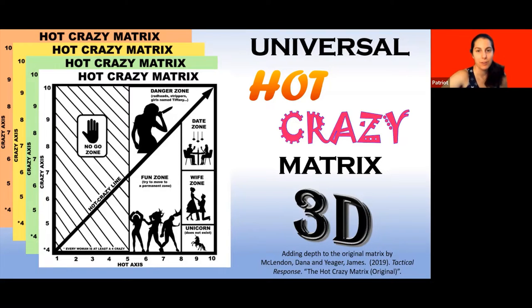Many of you may be familiar with the universal hot crazy matrix for classifying women and men developed by Dana McClendon and James Yeager of Tactical Response. Well, these guys did a great first pass at categorizing people based on only two characteristics. It is a bit shallow. So we're going to add some depth by taking this to a third dimension and incorporating mathematical equations.